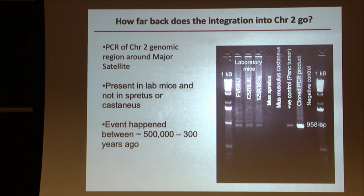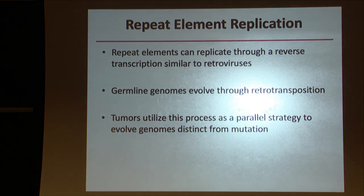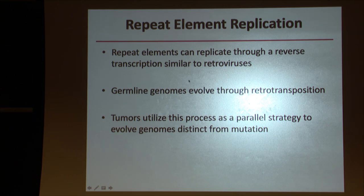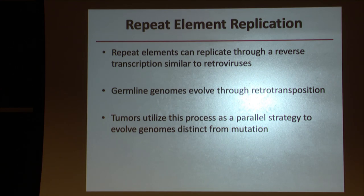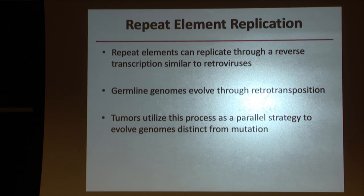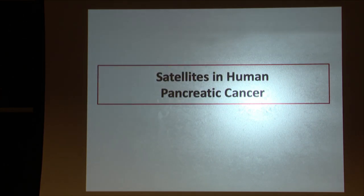These transposable elements can replicate themselves in the genome and have done so from the beginning of the species. Germline genomes evolved through this retrotransposition, and tumors are most certainly utilizing this process as a parallel strategy to rapidly evolve genomes, distinct from mutation. I think this is a very large driving force of what we call evolution.